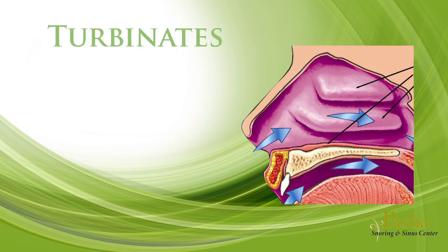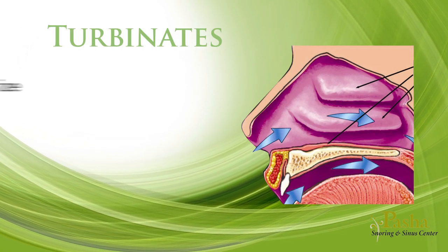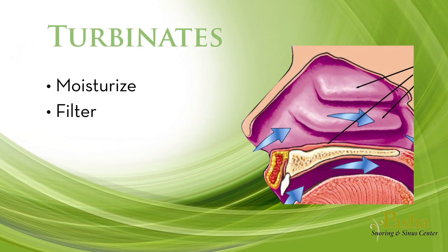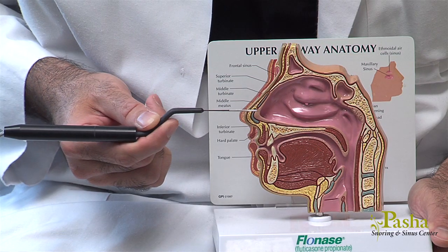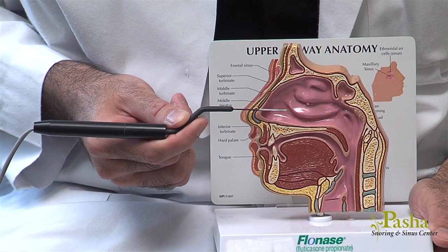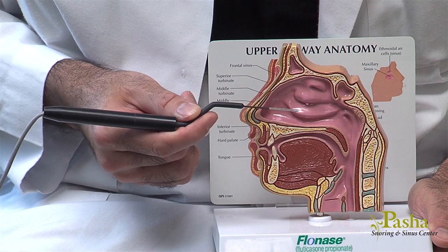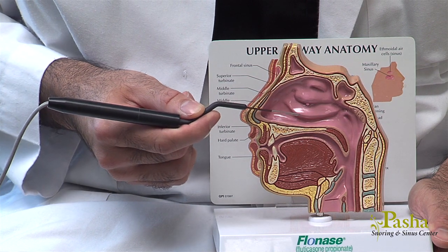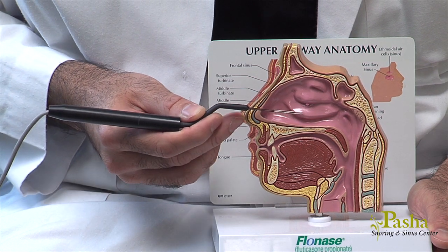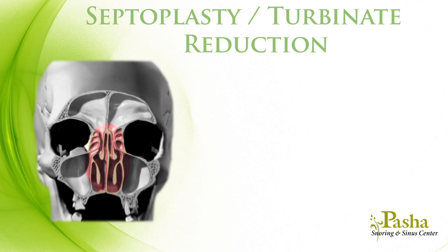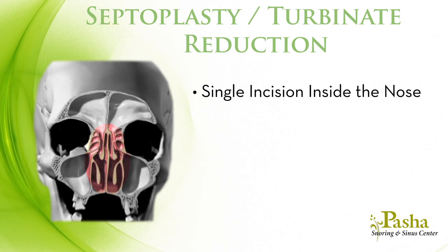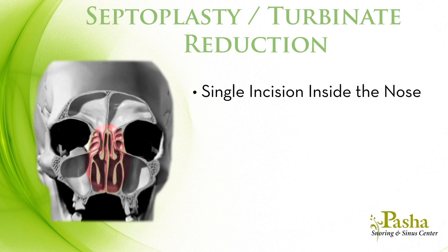The turbinates are very important structures. They moisturize, filter, and warm air that flows through the nose. Turbinate reduction is the technique often performed with the septoplasty to reduce the size of the turbinates. Both techniques begin after being given general anesthesia. Once you're asleep, a single incision is made inside the nose to access the cartilage of the septum.